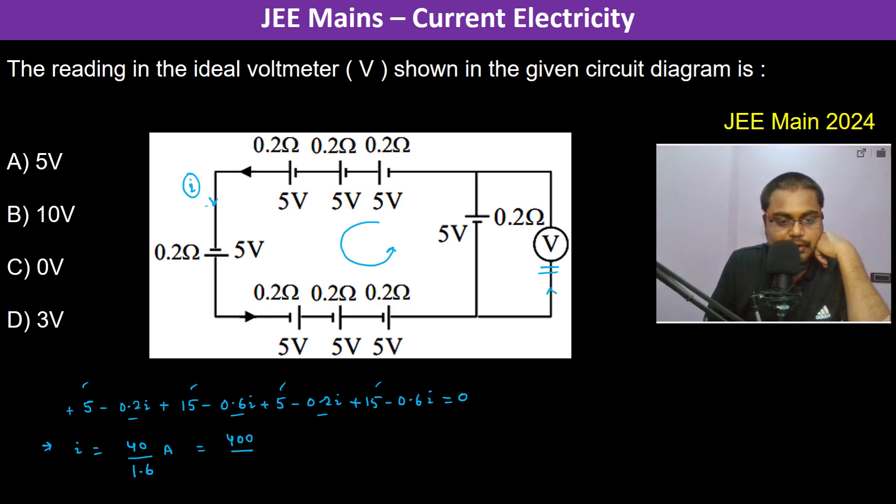So therefore 25 ampere is the current. Now we have to find the reading of the voltmeter. So therefore the current is flowing in this direction.